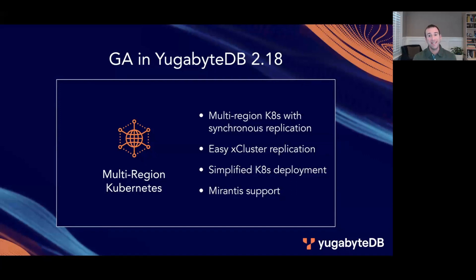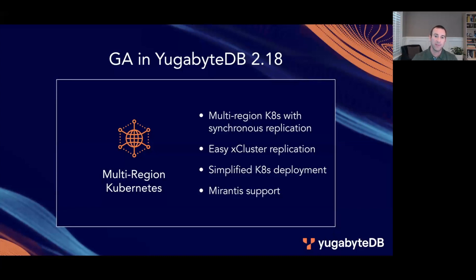We've also made it easier to leverage the power of x-cluster asynchronous replication with Kubernetes, with new integration in YugabyteDB Anywhere. Thanks to those two updates, you now have a full range of deployment options to match your app needs — something you just cannot do with other distributed SQL offerings today. Additional Kubernetes enhancements include support for shared namespaces, incremental backups, and support for the Mirantis Kubernetes engine.